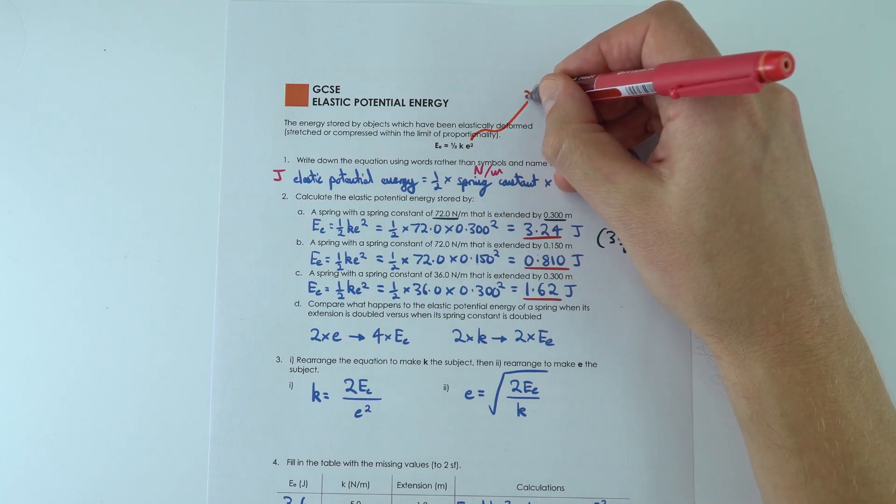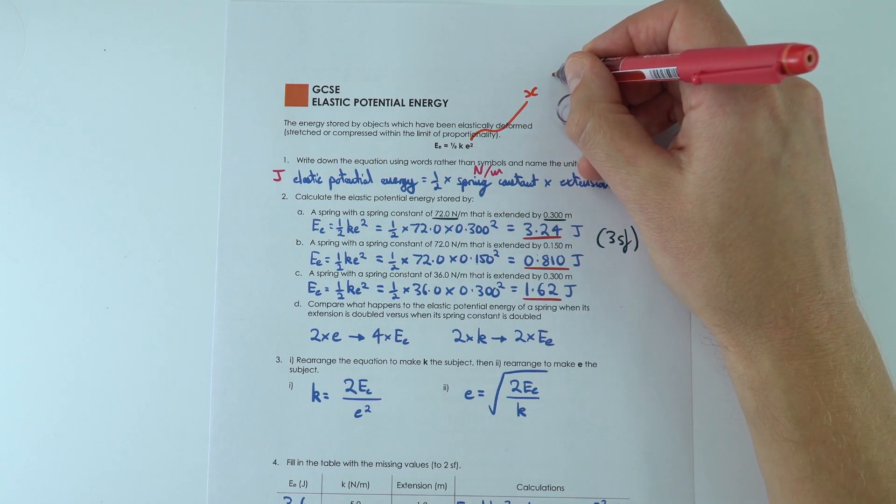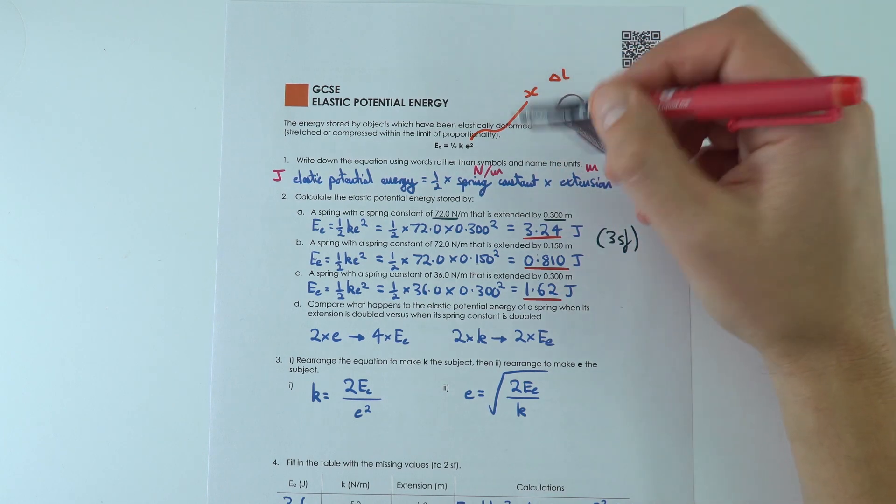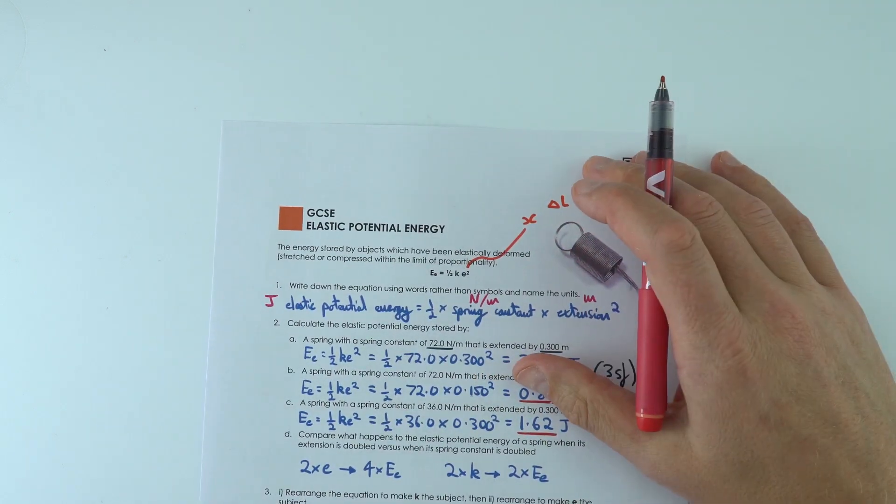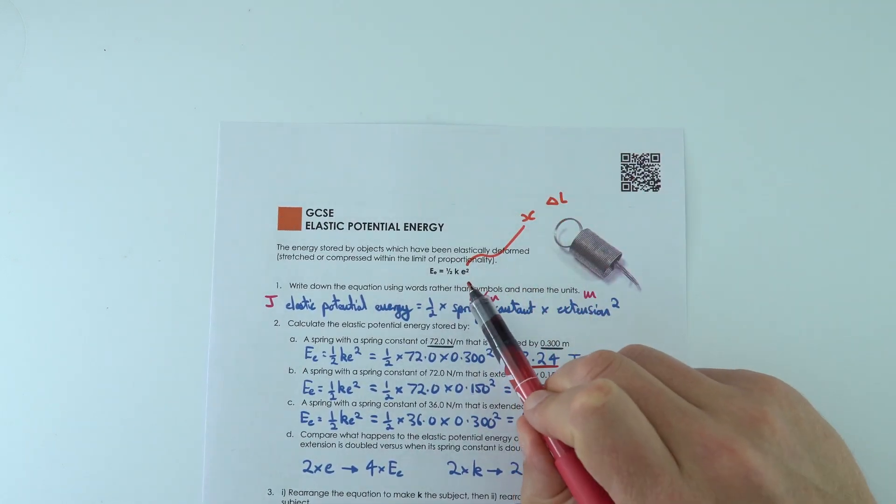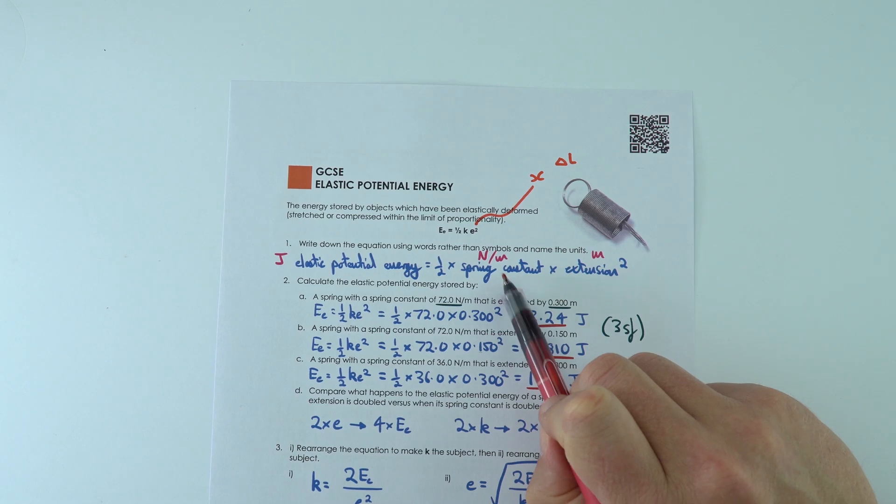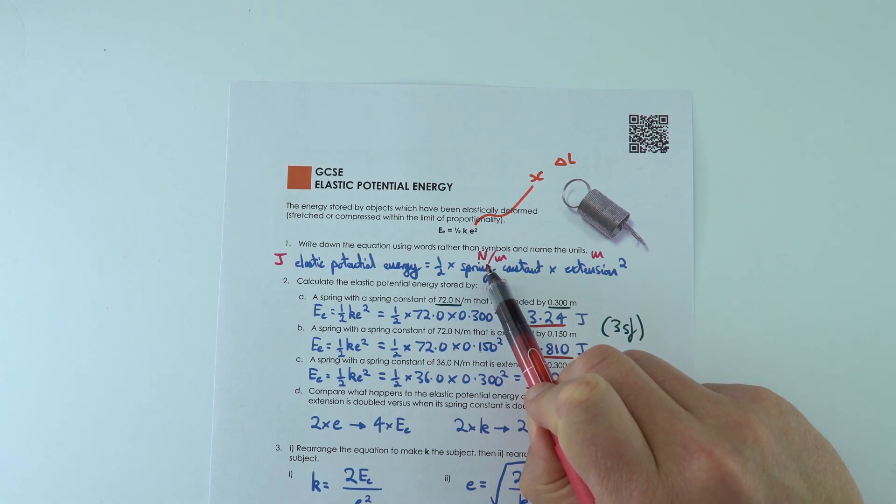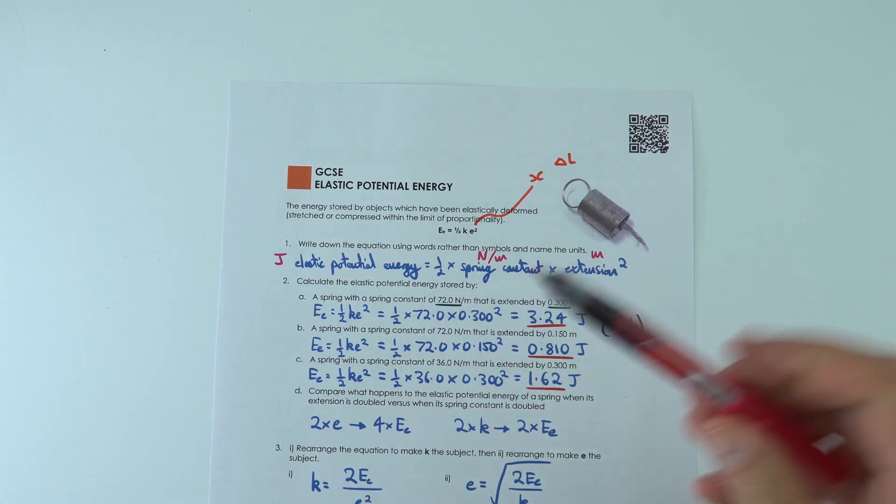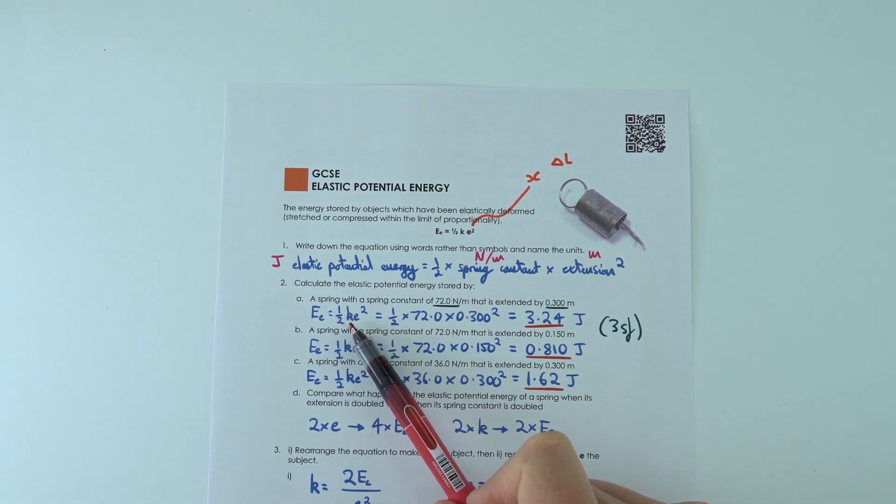Other exam boards might use the value of x to be extension or even delta l, so just check with whichever exam board you're studying. But I'm going to use e for the extension and spring constant k is measured in newtons per meter. So for the first one, all I did was I took the equation, I put the numbers in to find these values here to three significant figures.